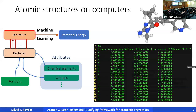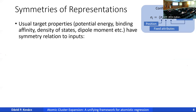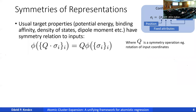We want to predict something — for example the potential energy. What symmetries does the representation need? I'll introduce some notation: sigma describes the state of an atom, with a position, attributes such as chemical element, and possibly learnable features like vectors or tensors. Typical target properties have symmetries — potential energy and binding affinity are invariant, while a dipole moment is a vector.